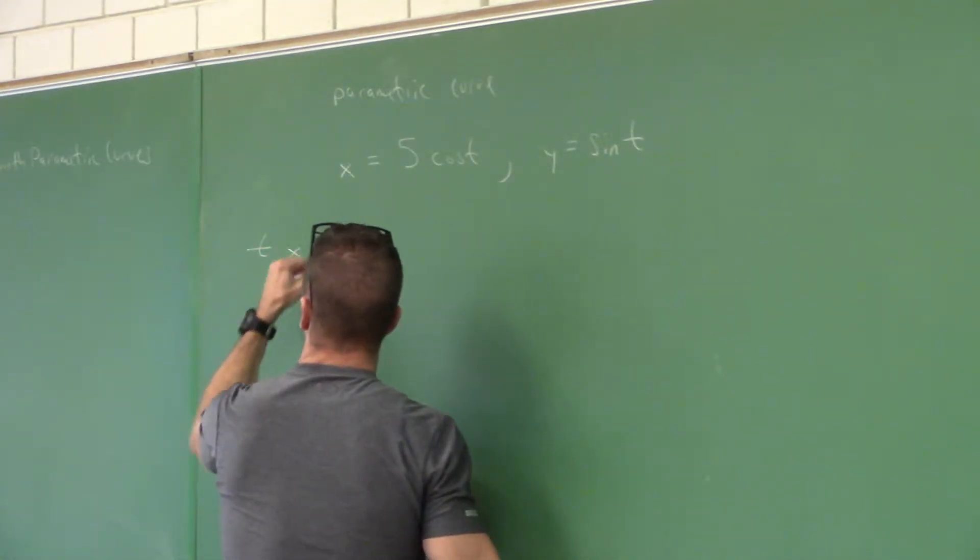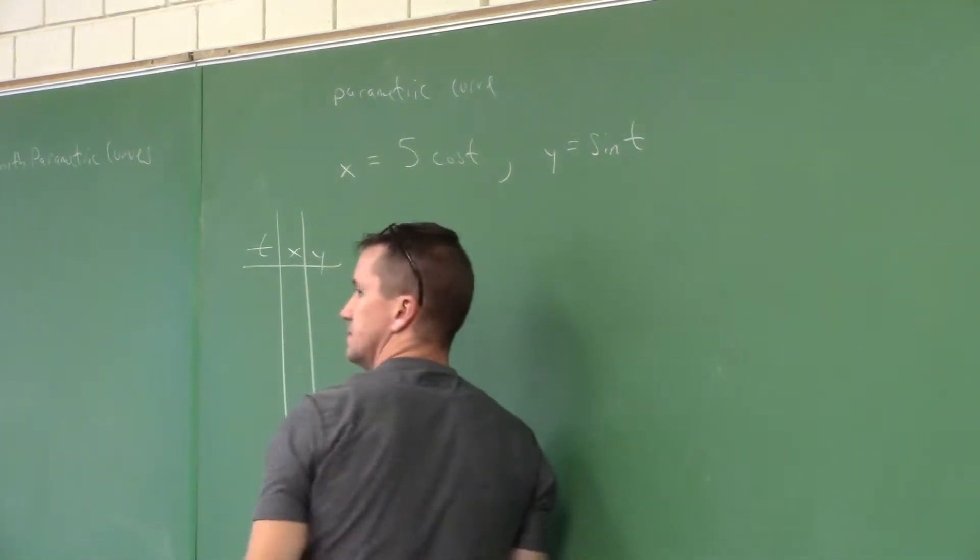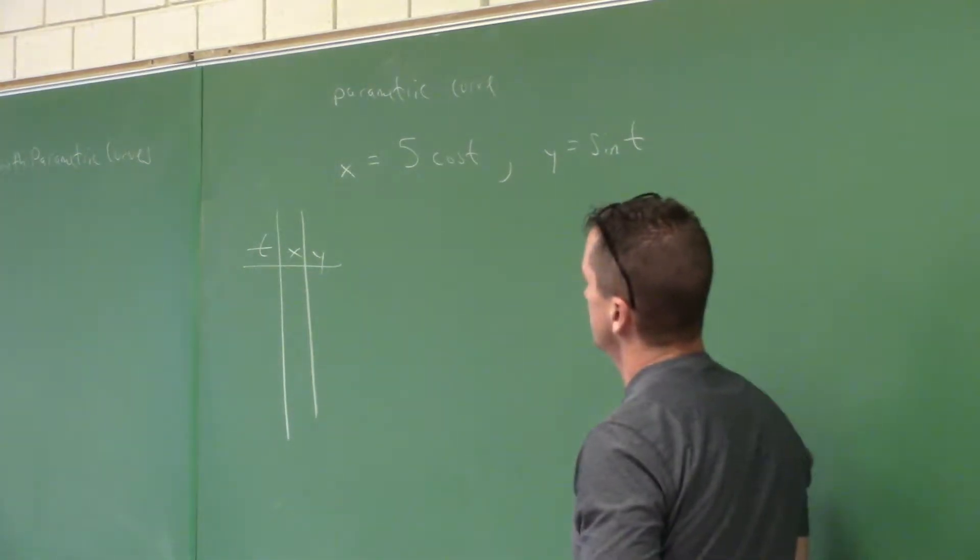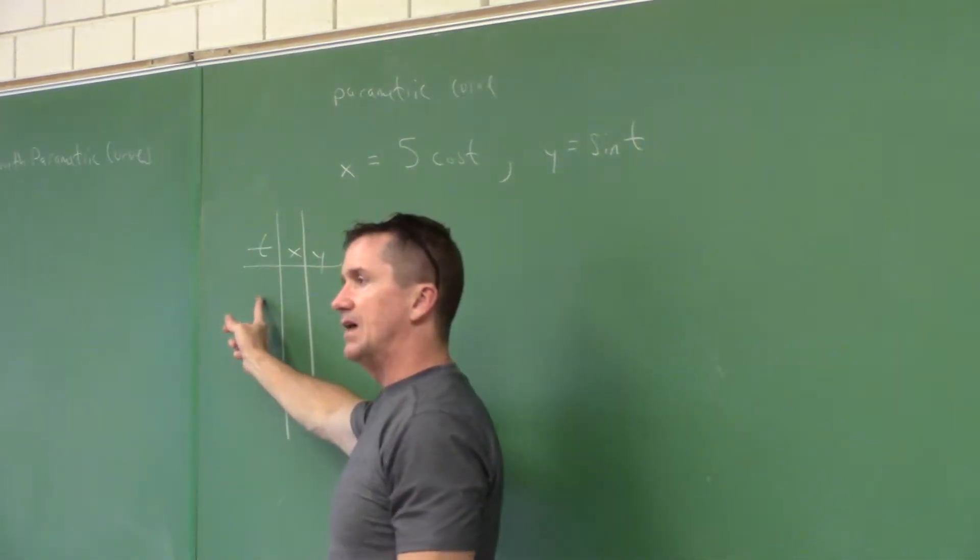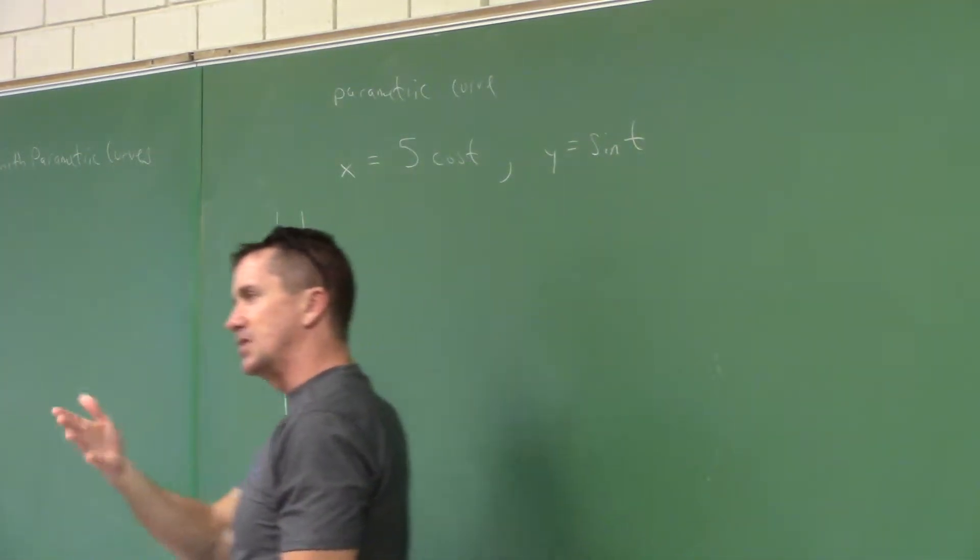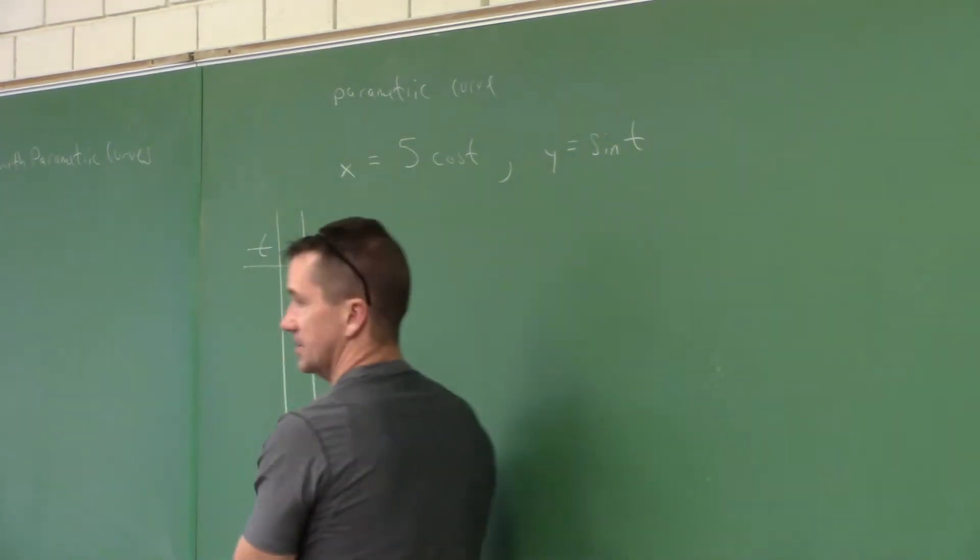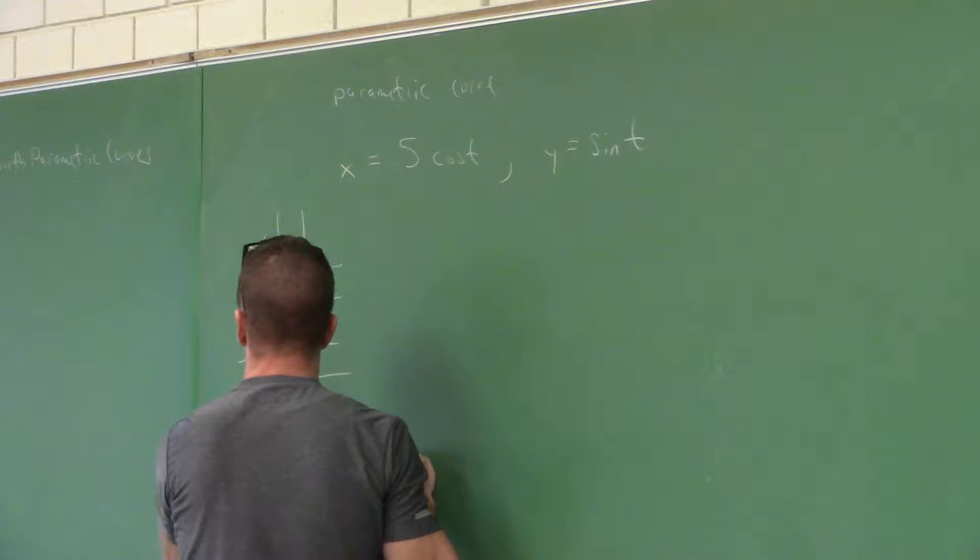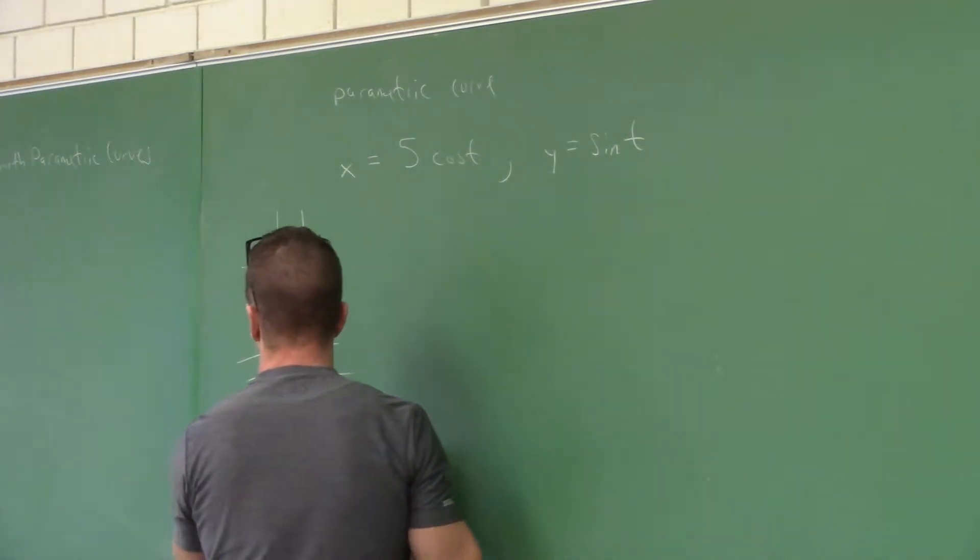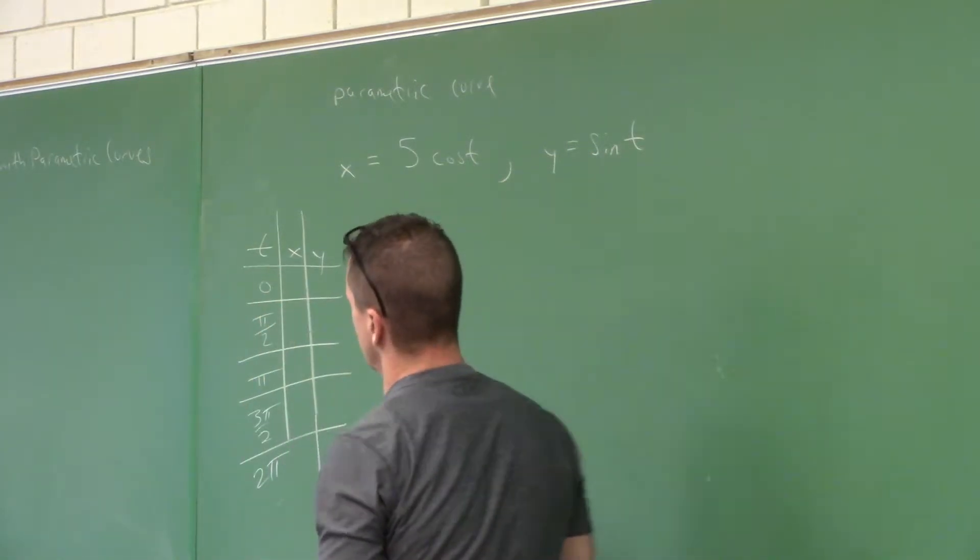Remember, this method works every time, right? I just make a table. But because of cosine and sine, the nature of these trig functions, do you agree for the t values that we select it would be good to use 0, π/2, π, 3π/2, and 2π? Let's just see what happens with these x, y coordinates. We'll sketch the curve and put an arrow to indicate the path in which t increases.